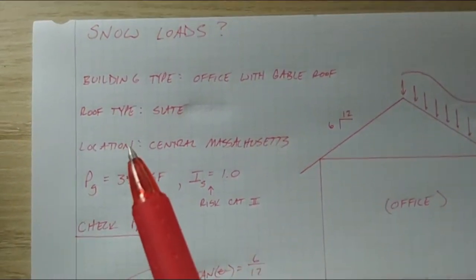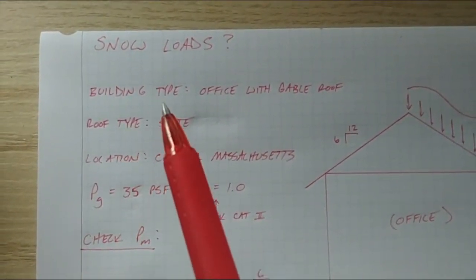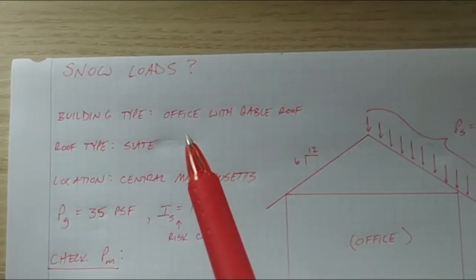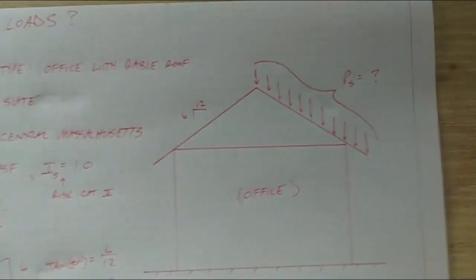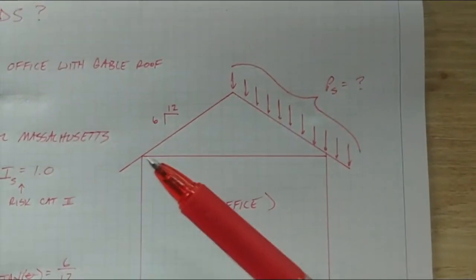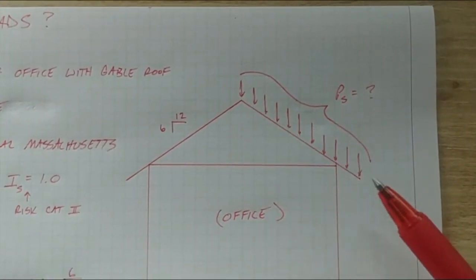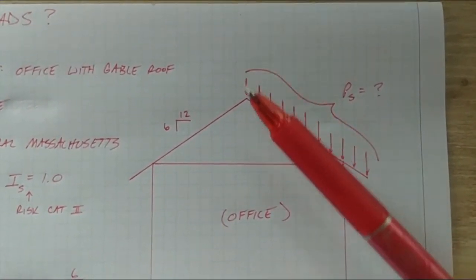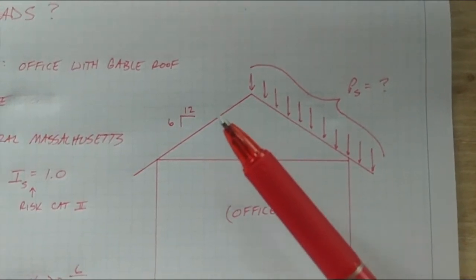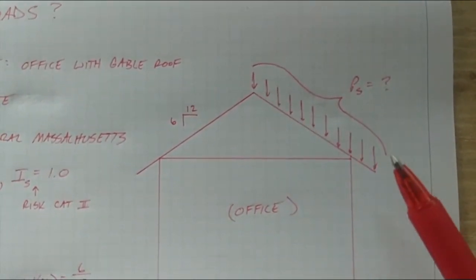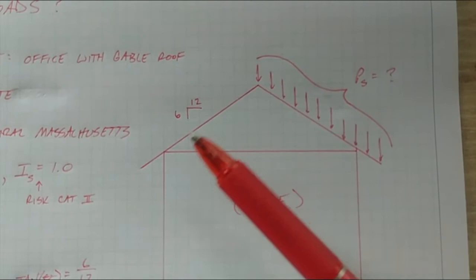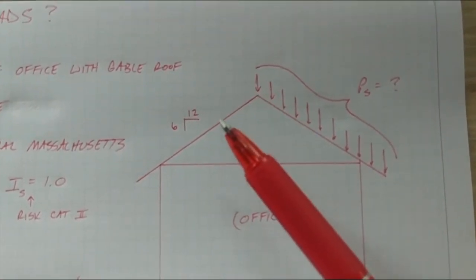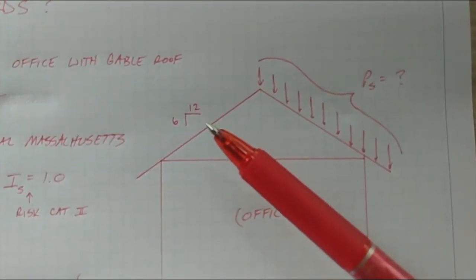So what else do we need to define snow loads? We need a building type. We have an office with a gable roof. What's a gable roof? This is a typical gable roof. You have your peak of the roof at the center line of the roof, and it has some type of pitch to it on either side. The pitch or the slope of the roof is designated usually in the architect's design drawings.